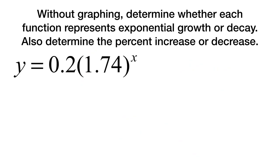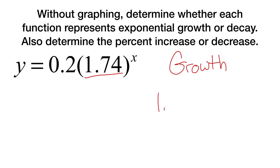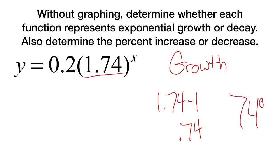Now let's try this one. If you look at this value, it is greater than one, so it is growth. To figure out our percent, the distance from 1.74 to one ends up being 0.74, which means a 74 percent increase.